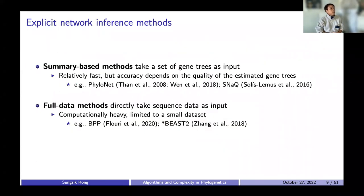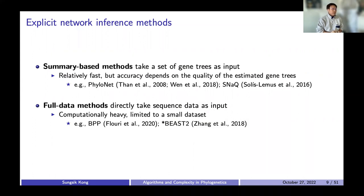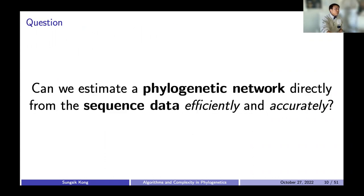So what should they have done? They should have estimated explicit networks. In recent years, a handful of methods that estimate explicit networks from genomic data have been proposed, and they can largely be classified as summary-based methods, which take a set of gene trees as input, and full data methods that directly take sequence data as input. Summary-based methods are advantageous because they are relatively fast, but their accuracy completely depends on the quality of the estimated gene trees. On the other hand, full data methods can utilize the signal in the alignment, but they are computationally very heavy, limiting their use to very small data sets.